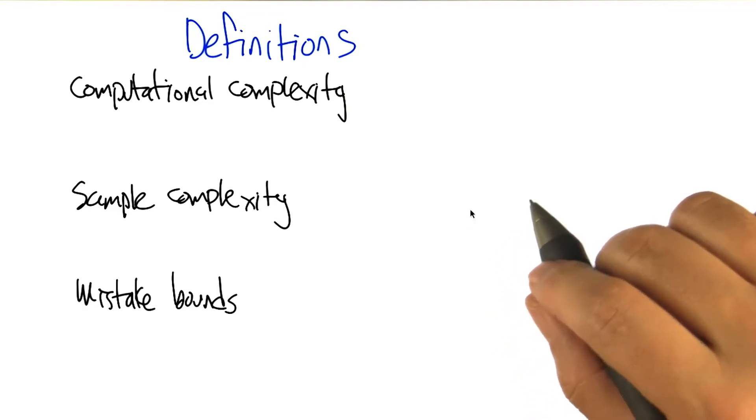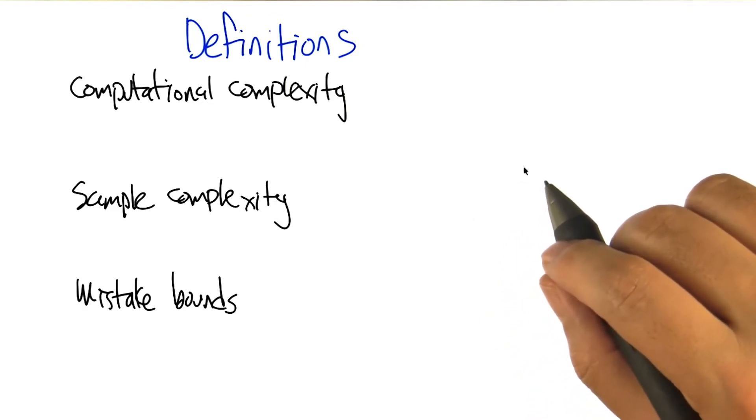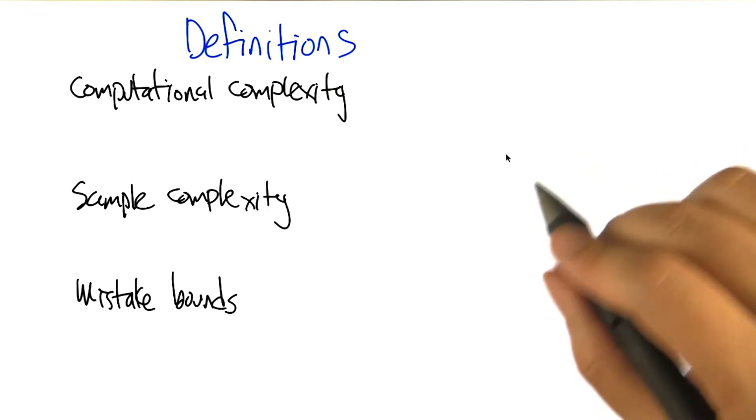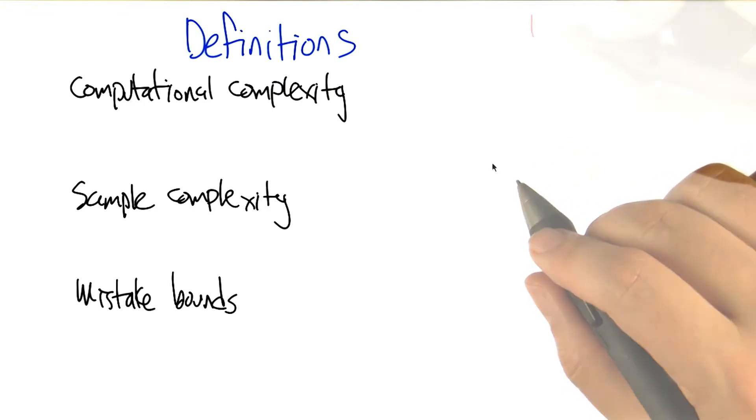All right, so remember Charles, we were talking about three different kinds of ways of choosing the inputs to the learner. Okay, so what were they again? We just looked at two of them.